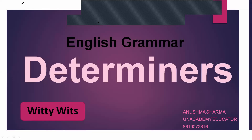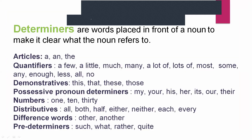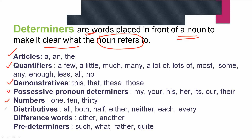Hey everyone, welcome to this channel Vitywits. Today in this video we are going to talk about determiners. Determiners are words that we place before nouns — they make it clear what the noun refers to. Under determiners, we cover articles, quantifiers, demonstrators, possessive pronouns, numbers, distributives, difference words, and predeterminers.